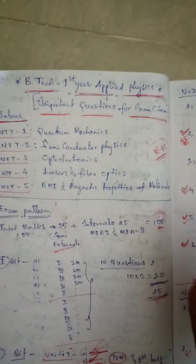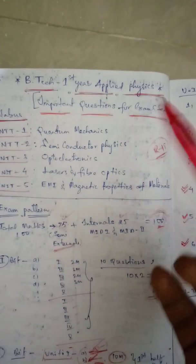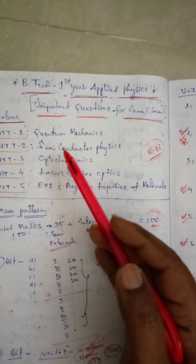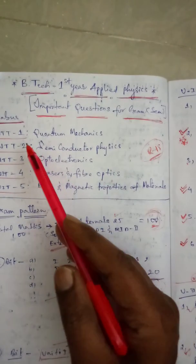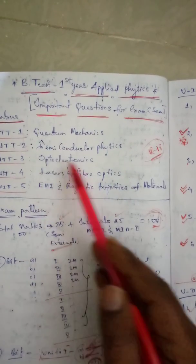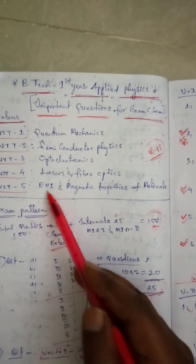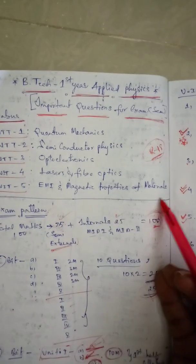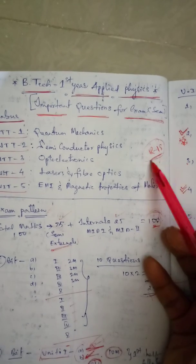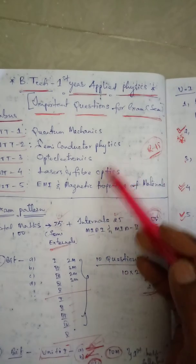Hello friends, welcome to my class. I'm going to give you very important questions of applied physics for the first year BTEC. The syllabus of applied physics covers: Unit 1 - Quantum Mechanics, Unit 2 - Semiconductor Physics, Unit 3 - Optoelectronics, Unit 4 - Laser and Fiber Optics, Unit 5 - Electromagnetic Induction and Magnetic Properties of Materials. This is the syllabus according to Regulation 18, and for every regulation the syllabus will change.